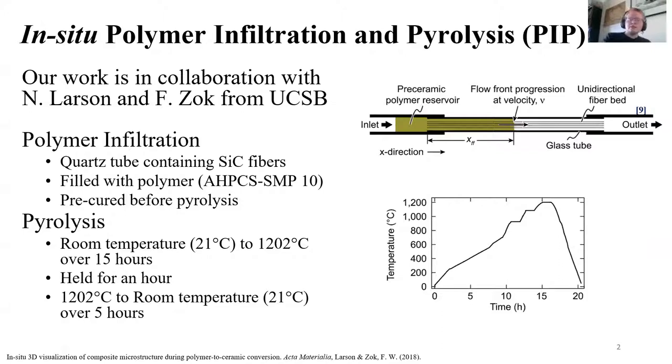In summary, Larson took a quartz tube containing around 4500 silicon carbide fibers, filled it with a silicon carbide matrix precursor, and precured it at 120 degrees Celsius for two hours before pyrolysis. The actual pyrolysis process took a little bit over 20 hours. Larson first took the sample from room temperature to 1202 degrees C, then held it, and then cooled it back down to room temperature.